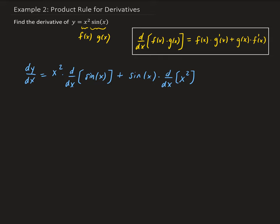So y prime is going to be x squared times the derivative of cosine x is—sorry, the derivative of sine x is cosine x—plus sine x times the derivative of x squared, which is 2x.